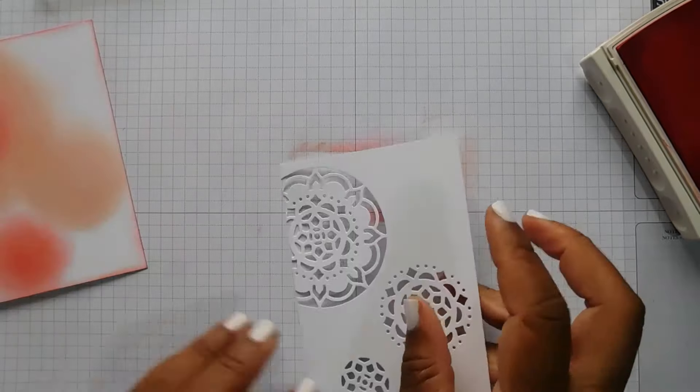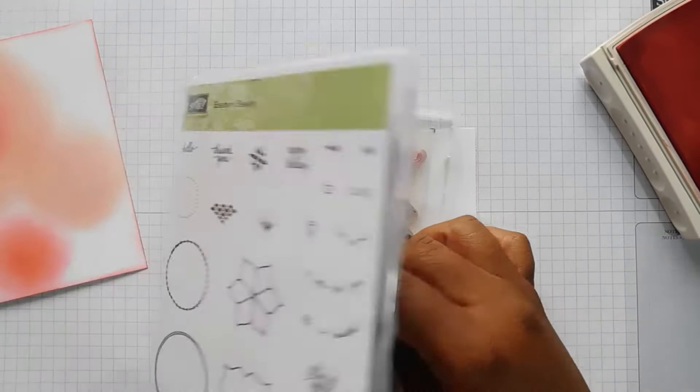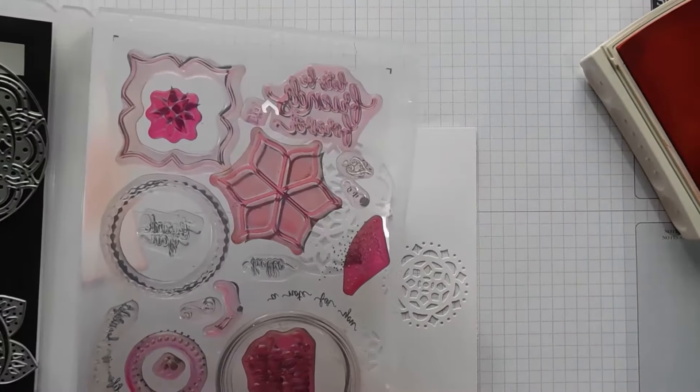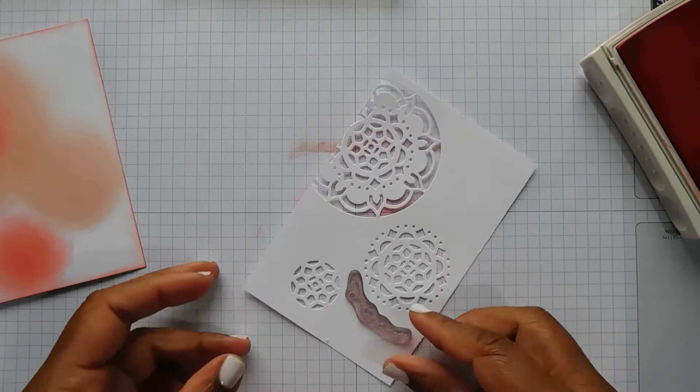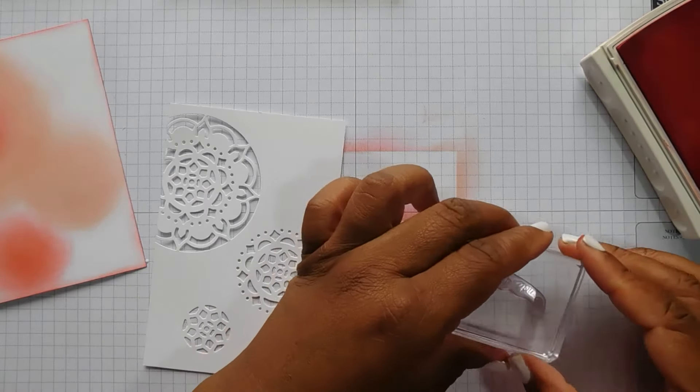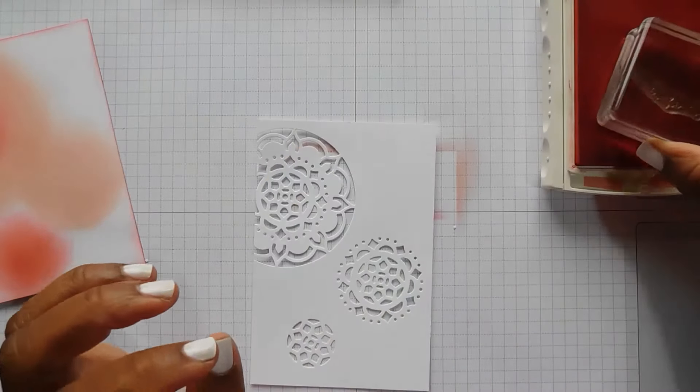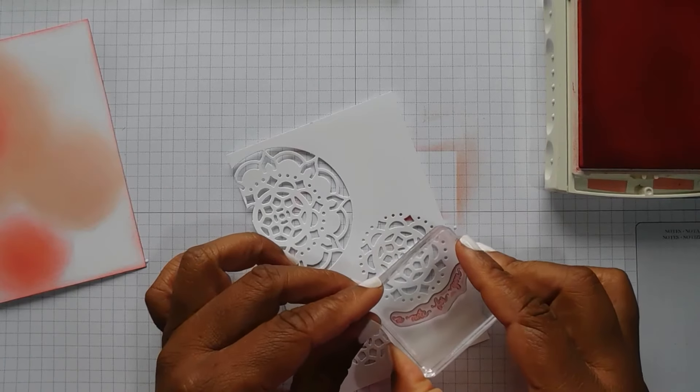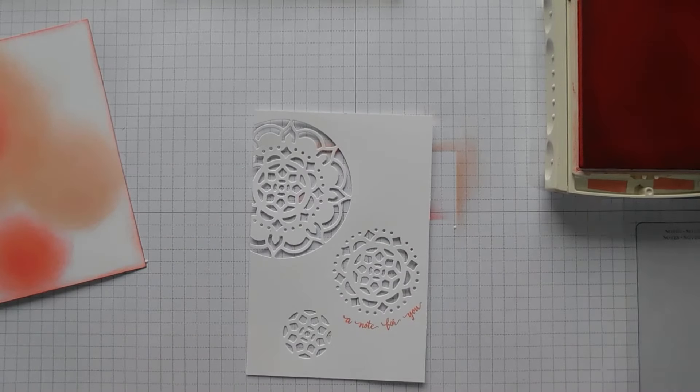Before we stick it together I'm just going to do the stamping on here. And I want one of the curvy sentiments. A note for you. I think down there will look nice. And we'll go with flirty flamingo. There we go. Cute.